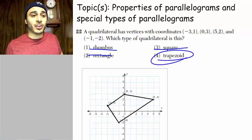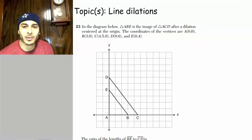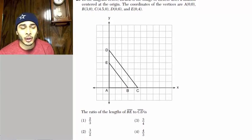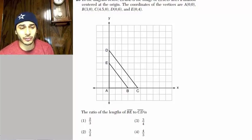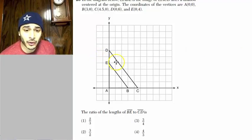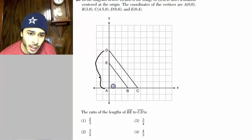In a diagram below, triangle ABE is the image of triangle ACD after a dilation centered at the origin. The ratio of the lengths of BE to CD is. Okay, so we know that these two triangles are similar. And we know they're similar because one is a dilation of the other. So if they are similar, let's look at the measurement of the lengths here. We can observe here that the length of AD is 1, 2, 3, 4, 5, 6.